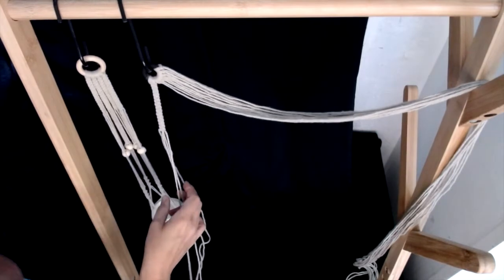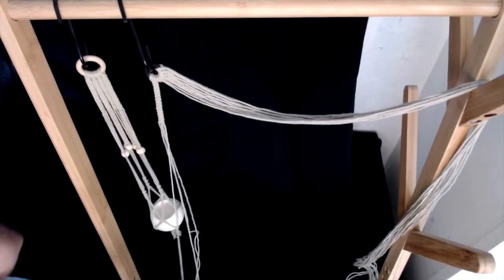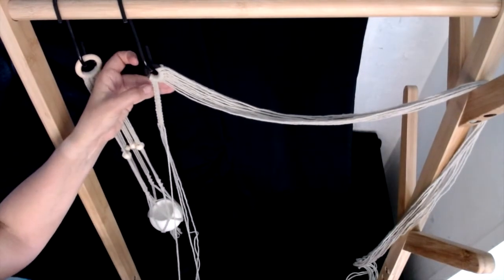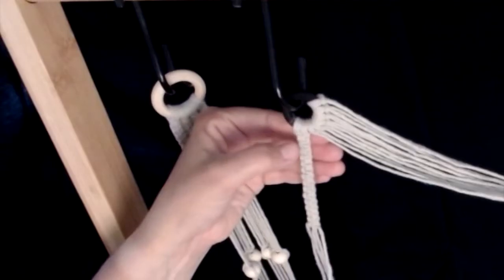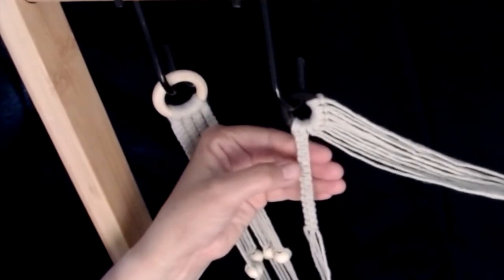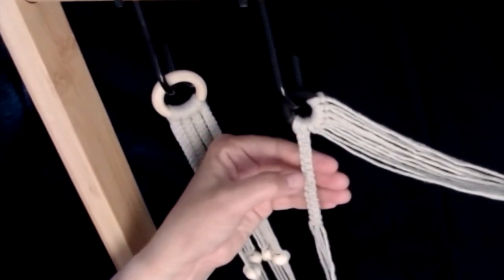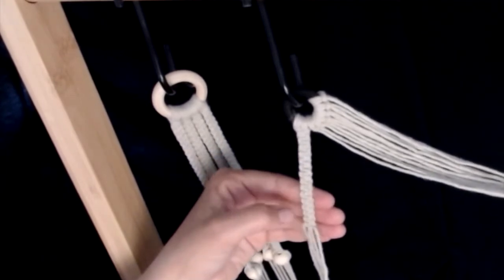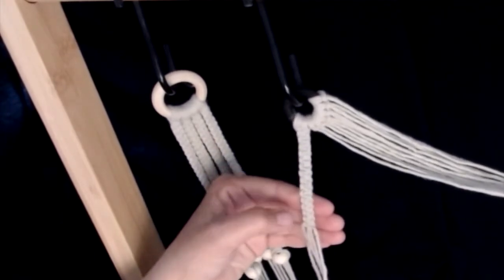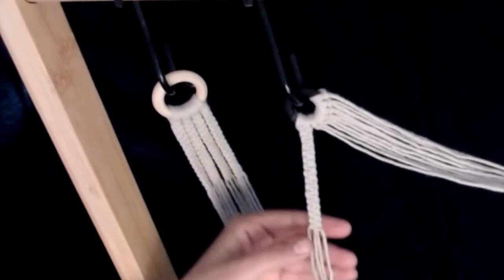You can count back how many knots you've done by counting one side of the forward loops. 1, 2, 3, 4, 5, 6, 7, 8, 9, 10, 11, 12, 13, 14, 15.